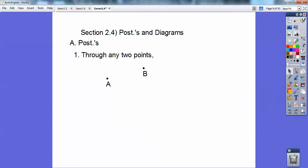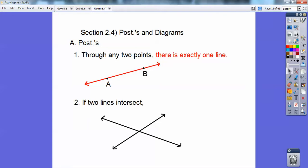Okay, through any two points, there's two points right there, there's exactly one line, and it's right there. That's one first postulate. Second one is, if two lines intersect, there's two intersecting lines, then their intersection is a point. There it is right there.